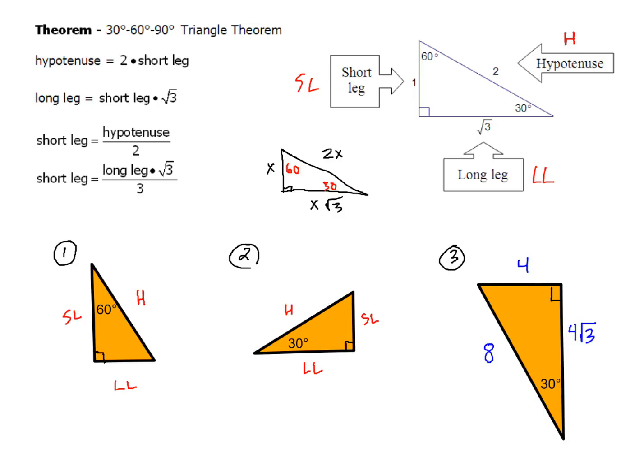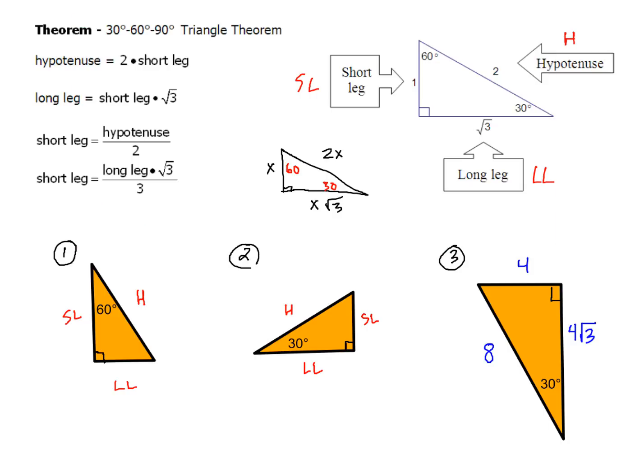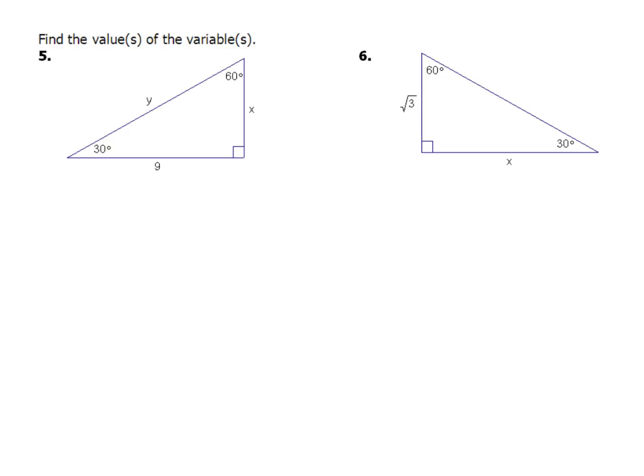Pretty straightforward if you're given the short leg. For more examples of problems similar to that, you can take a look at the 7-4 video, solving 30-60-90 triangles given the short leg. But we're actually going to get into a couple other examples. Here we're going to find the value of these variables — x and y in problem number 5, and just x in problem number 6.